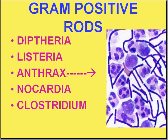Anthrax — we have heard much about this in terms of bioterrorism. Classically, Bacillus anthracis infection can be acquired through oral, inhalation, or cutaneous routes, and it is a feared agent of bioterrorism. Nocardia, or nocardiosis, is a gram-positive rod with some fungal-like properties that classically causes respiratory infections in immunocompromised hosts.